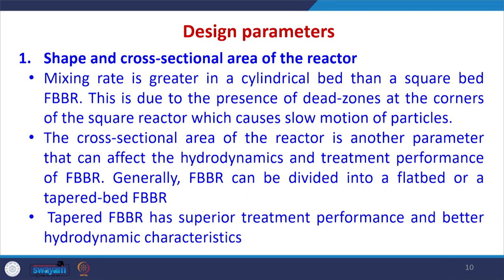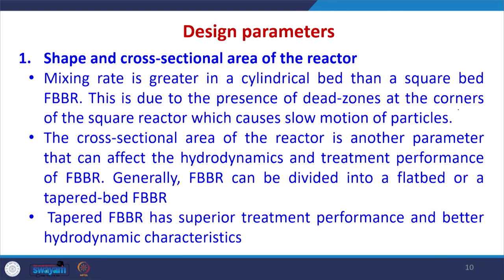One of the most important design parameters is the shape and cross-sectional area of the reactor. The mixing rate is greater in a cylindrical bed than a square bed FBBR. This is due to the presence of dead zones at the corners of the square reactor — in a square reactor there will be dead zones where no mixing occurs. So it is always preferable to have a cylindrical bed reactor.